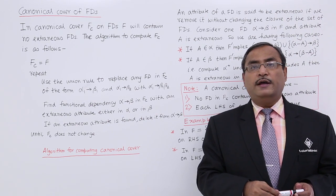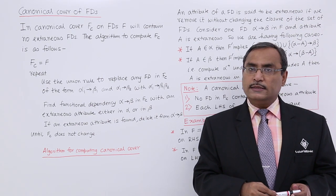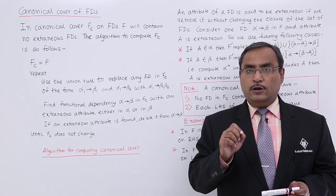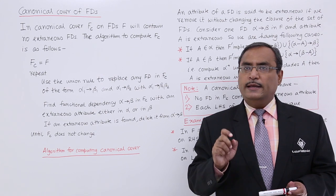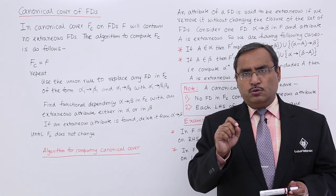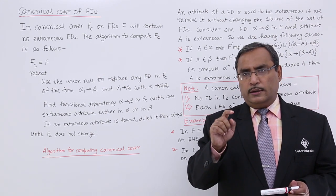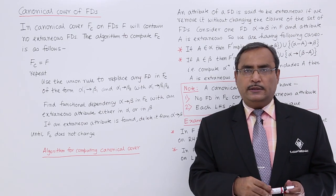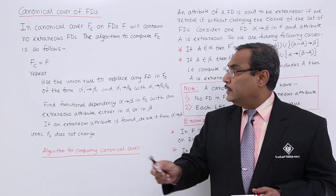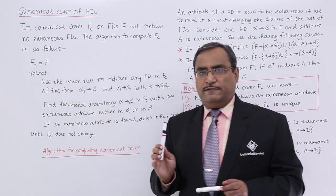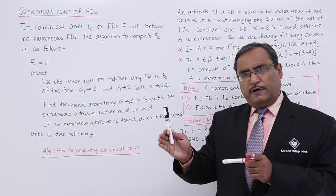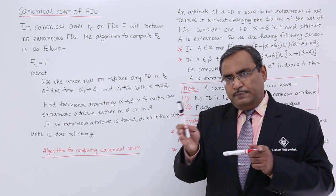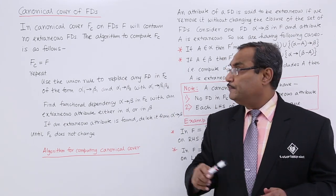The minimal cover of F will be known as the canonical cover of F and it will be denoted by fc. Now let us go through the algorithm. First, fc is equal to F — whatever the functional dependencies set is given to us, we shall keep this in fc.